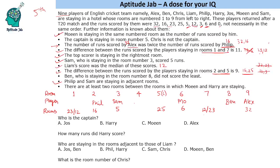We now have just 2 remaining scores: 0 and 3. Ben is in room 8 and did not score the least, so Ben cannot score 0. Ben must have scored 3 and the other remaining player scored 0. There must be at least 2 rooms between Moeen and Harry. Moeen is in room 6, so Harry cannot be in rooms 5, 7, or nearby — the only valid possibility is room 9, but Alex is there. So Harry goes to room 1. Harry has 23 runs and Liam has 12 runs, placed in room 7.